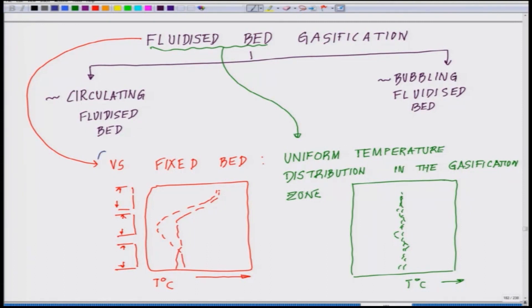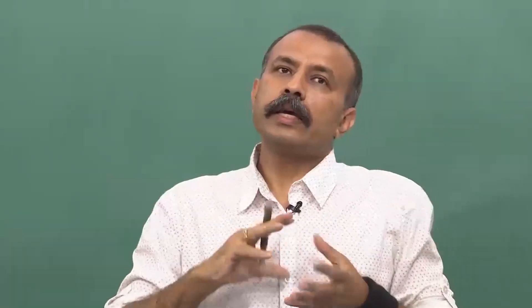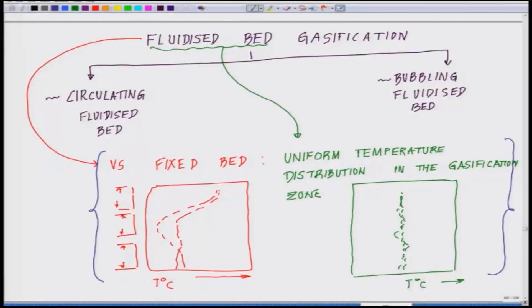Your take-home message from this part: get this difference very clear in your mind — how the temperature varies in both types. In the fluidized bed, the temperature remains very constant; if it is 1000°C it will remain 1000°C throughout. In other words, there is a homogeneous mixing feasible in the fluidized bed compared to the fixed bed. In the fixed bed you have to maintain temperature at different levels, requiring a lot of finer control. This is a very significant and important difference between fluidized bed and fixed bed.